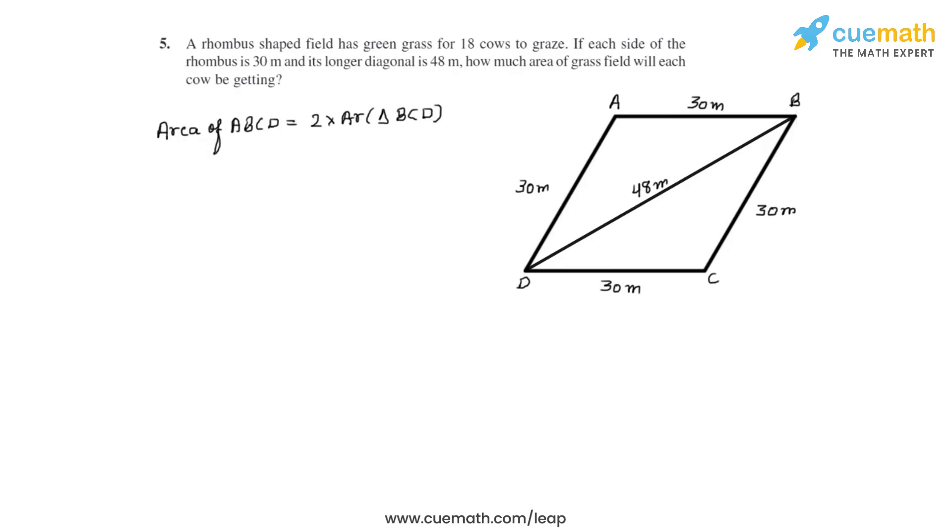Let's substitute these values: two times 432, which is 864 meter square. Now our next step is to find how much area will each cow be getting to graze, as we have found the total area of the field.